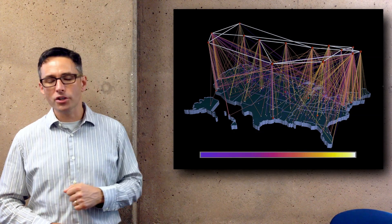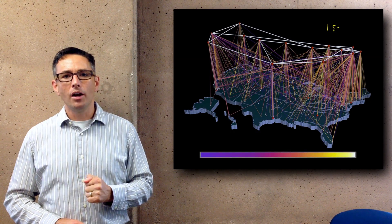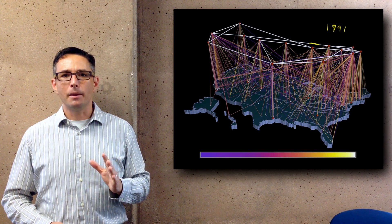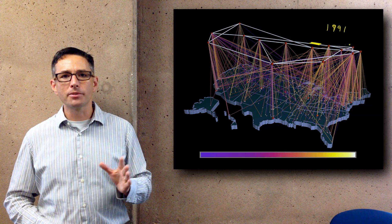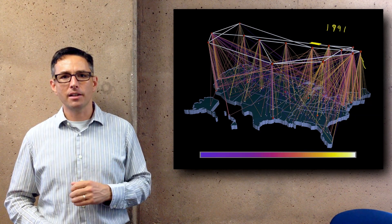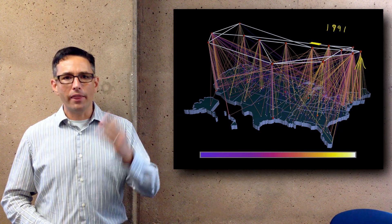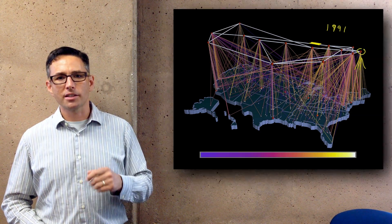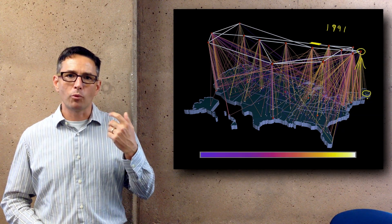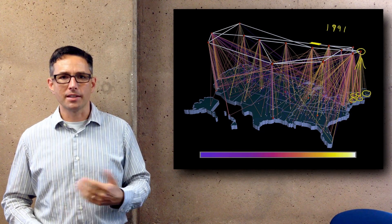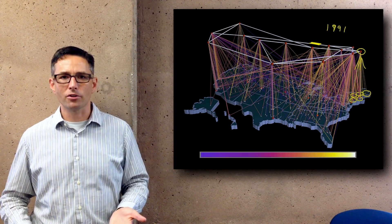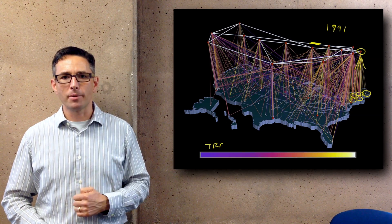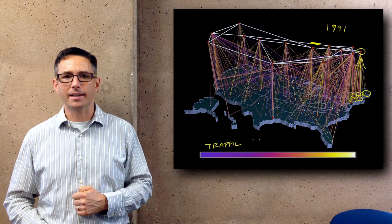This graphic here shows you, in 1991, what the connections were in the NSF Net. Those white lines being the backbone connecting major hubs like freeways connect cities, and the vertical pink and yellow lines showing the smaller connections that would go from regional hubs down to local universities, in the same way that arterial roads or residential roads connect houses with the freeway. The colors represent how much traffic was being sent at that time.